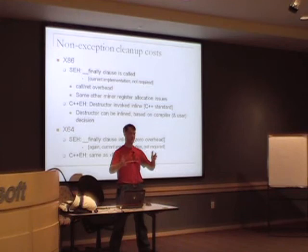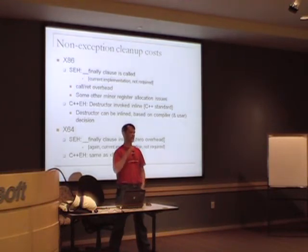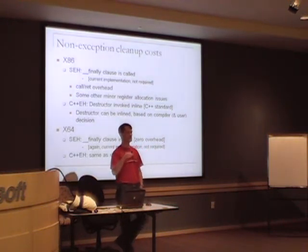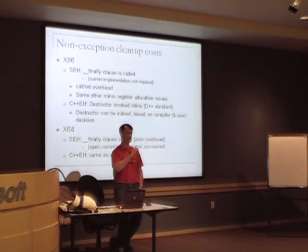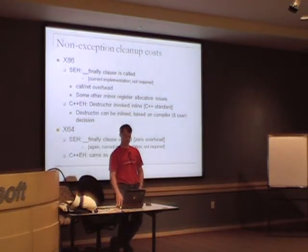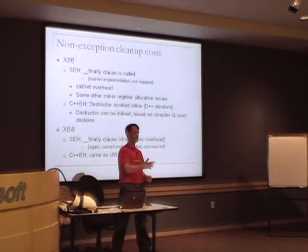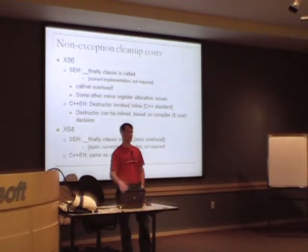For cleanup costs — when no exceptions occur but you still have to clean up — in structured exception handling on x86, code inside your finally block is put into a sub-function (a funclet) and we call that and return, adding a call overhead and some register allocation differences. For C++ exception handling, a destructor can actually be inlined, so if you have a small destructor, you get no overhead other than the state update. For x64, the finally clause is also inlined into the function, so there's no call cost. On x64 for C++, you can completely eliminate the cost of using that try block for cleaning up objects.